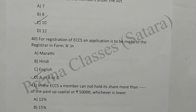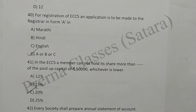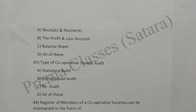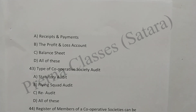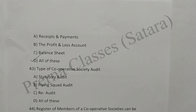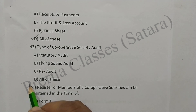Question 41: In an ECCS, a member cannot hold shares more than 1/5th of the share capital or Rs. 50,000, whichever is lower. Option C is correct. Question 42: Every society shall prepare a statement of accounts showing receipt and payment account, profit and loss account, balance sheet, and all of these. Option D is correct. Question 43: Types of cooperative society audit — statutory audit, flying squad audit, re-audit, and all of these. Option D is correct.